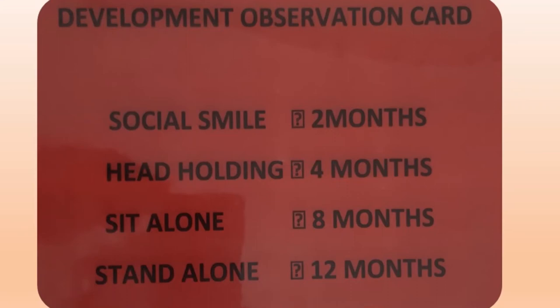Even if you have only one minute, you can assess the development of the child by using the observation card. A child should have a social smile by 2 months, head holding by 4 months, sit alone by 8 months, and stand alone by 12 months.